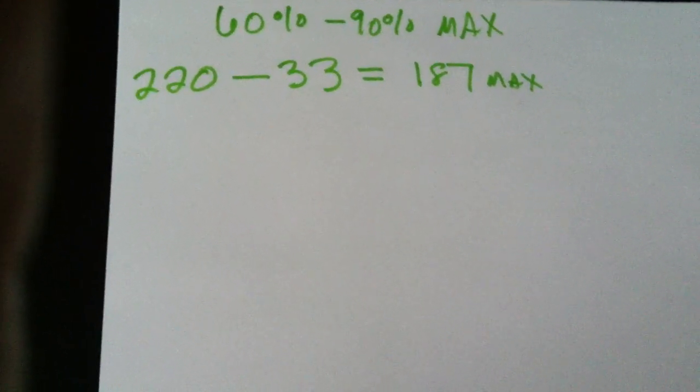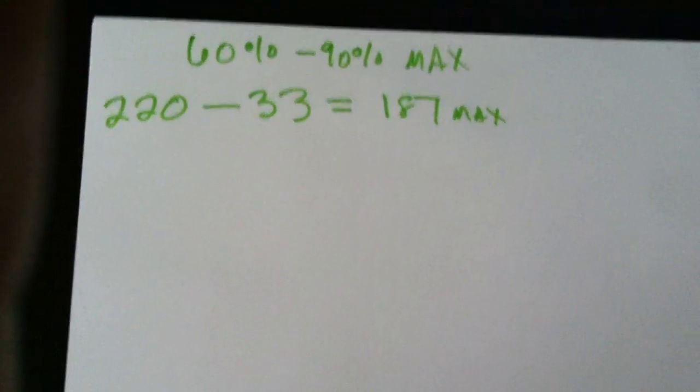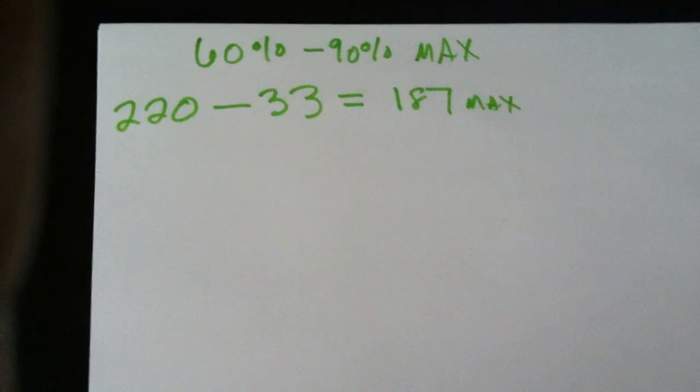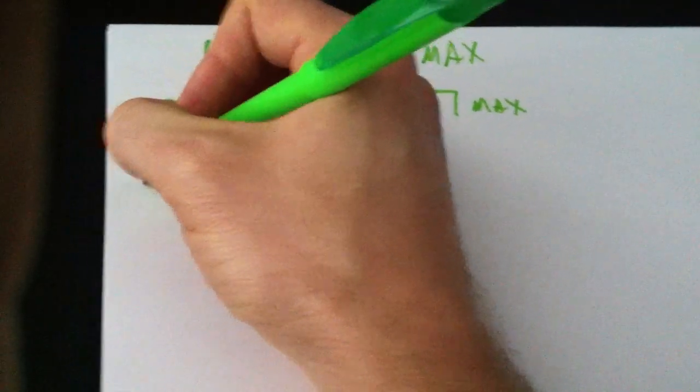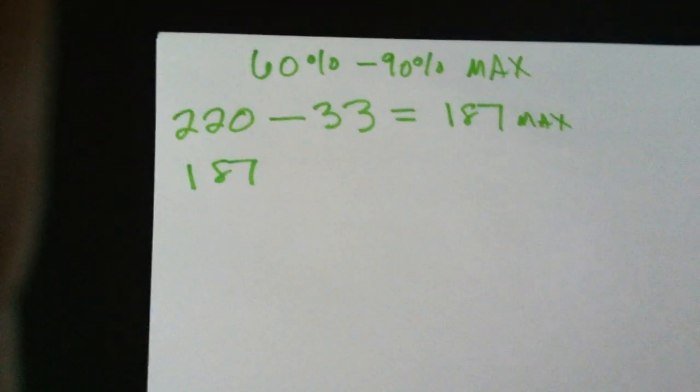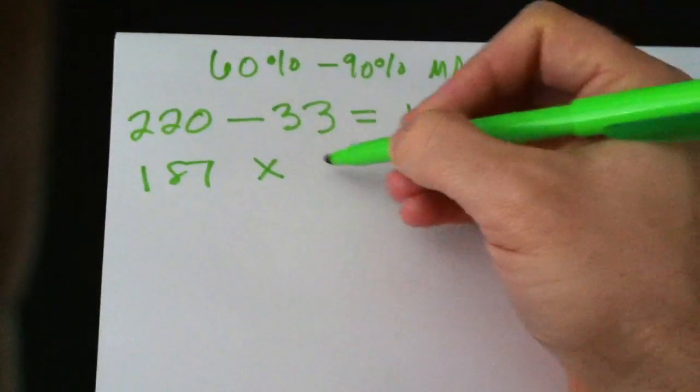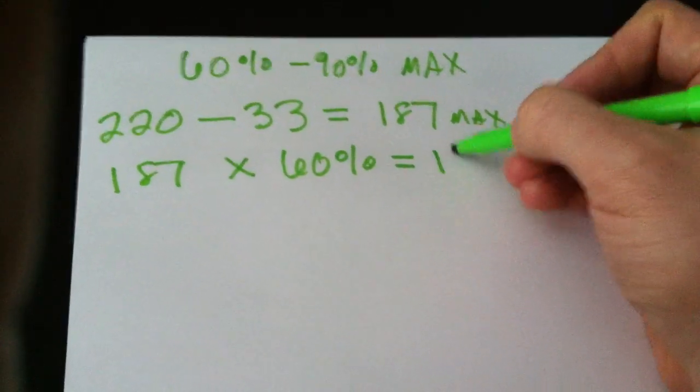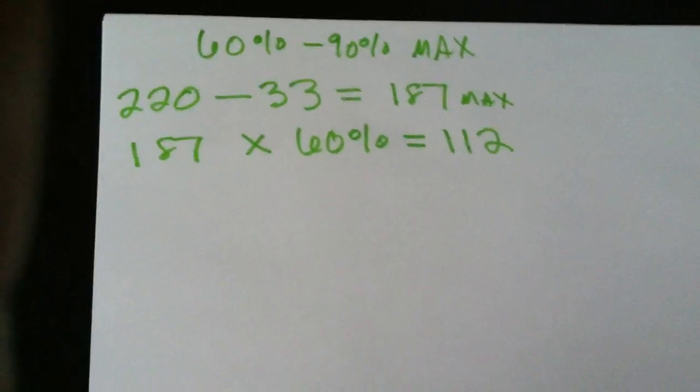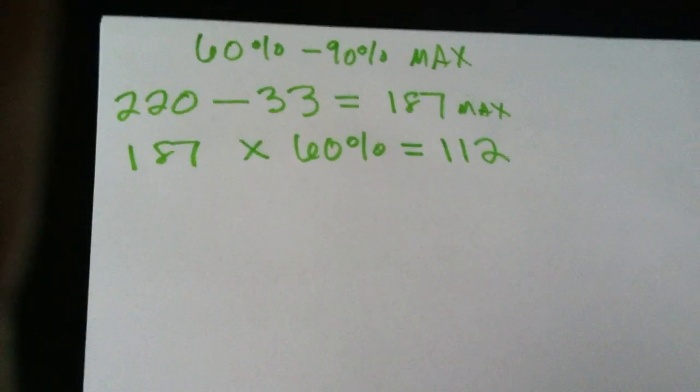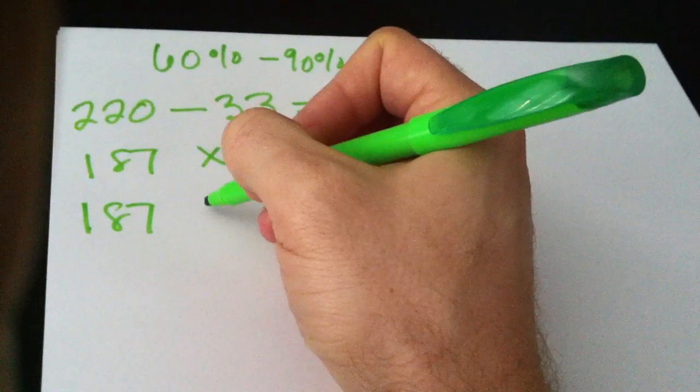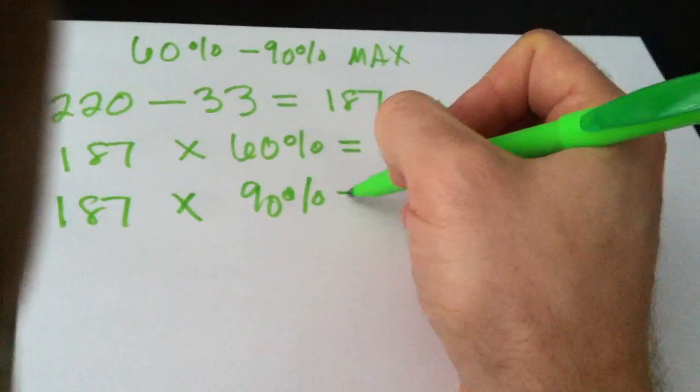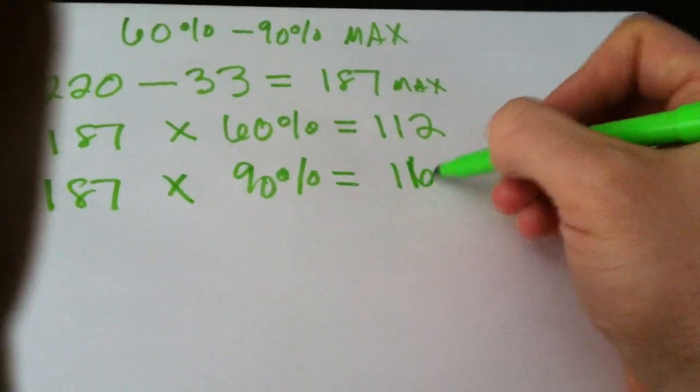So now we need to figure out what our range is that we want to try to stay in to get the greatest benefit in our workout. And that usually is between 60 and 90%. So let's start off with doing the 60%. You're going to take your max heart rate, and that's 187. And we're going to multiply that by 60%. And that equals roughly right at 112. So that's the low end of my range. Now I need to find the top end of my range. So we're going to take your 187 again, and we're going to multiply it by 90%. And that is roughly 168.